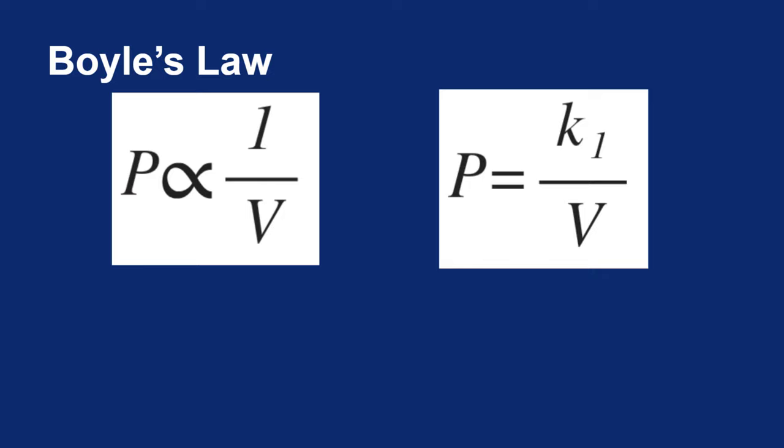Well if K1 is going to stay constant, I think you see the inverse proportionality. If you make volume bigger, then pressure must get smaller in order to maintain that equal sign. Likewise, if you make pressure bigger, the volume has to get smaller.